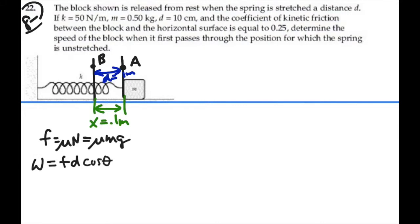But in this case, the d is going to the left. The frictional force is against the motion going to the right. So the angle between them is 180 degrees, and the cosine of 180 degrees is negative 1. So the work done equals negative frictional force times distance.